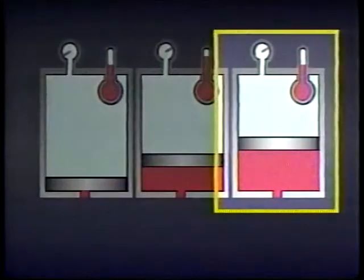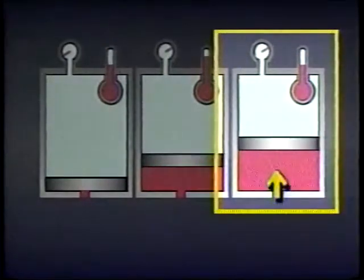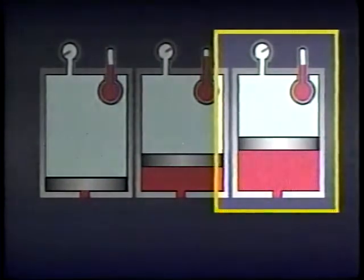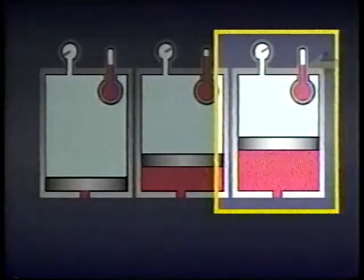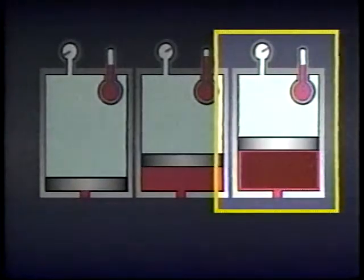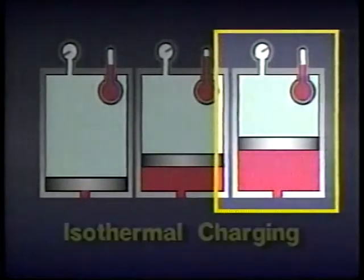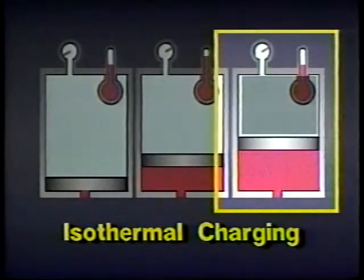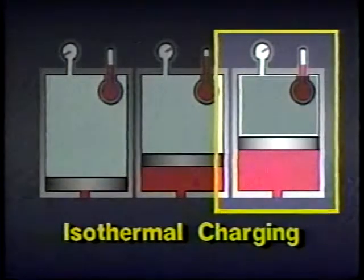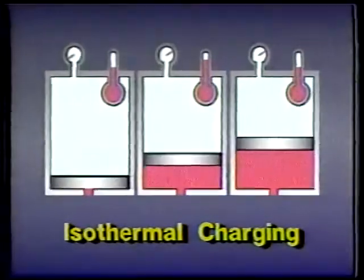However, if the accumulator is filled with fluid slowly enough that the gas pre-charge heats up very little, the usable volume will be larger because the gas takes up less space. This is called isothermal charging.